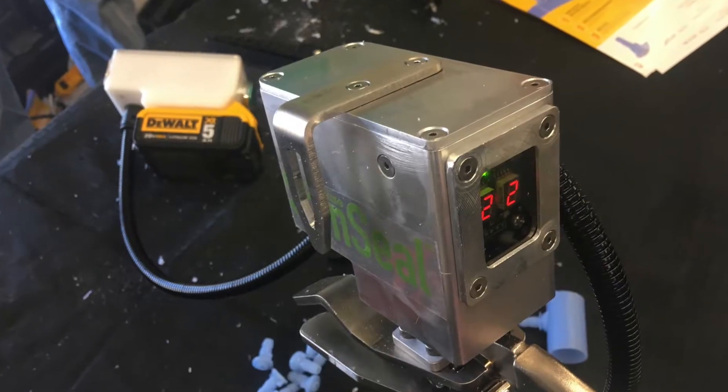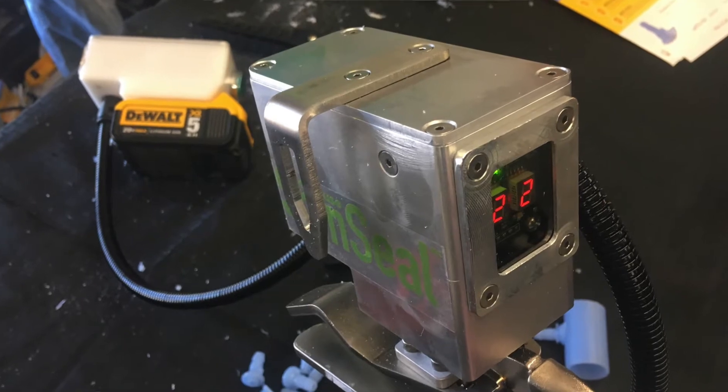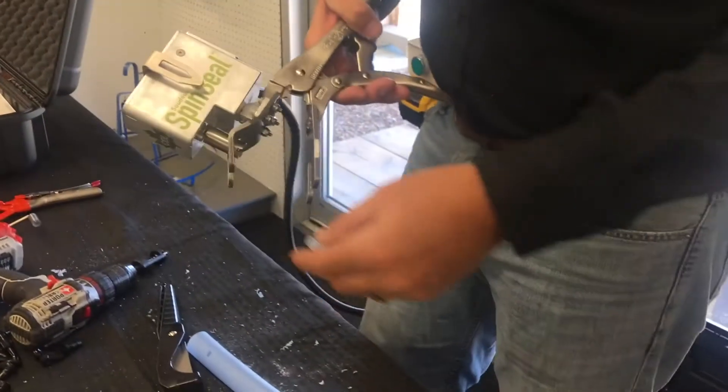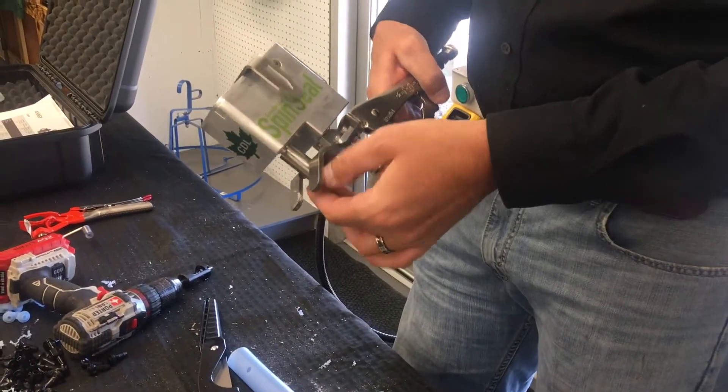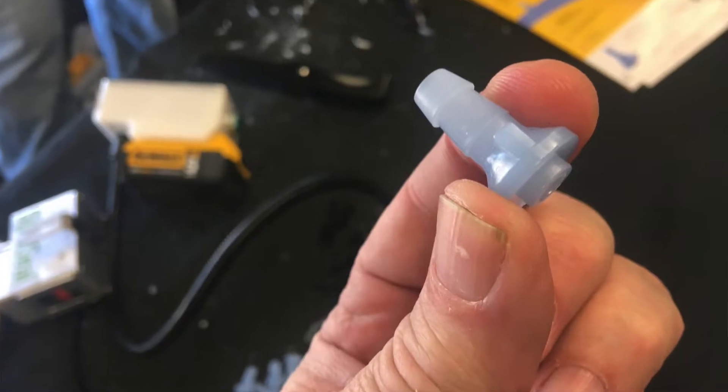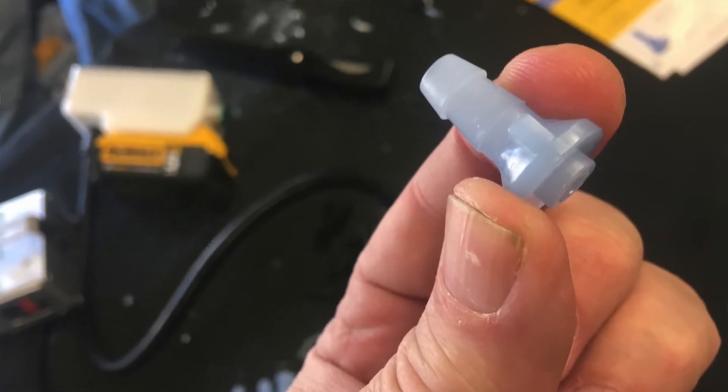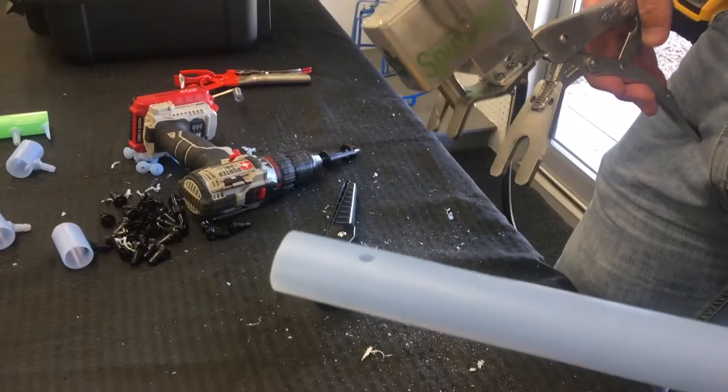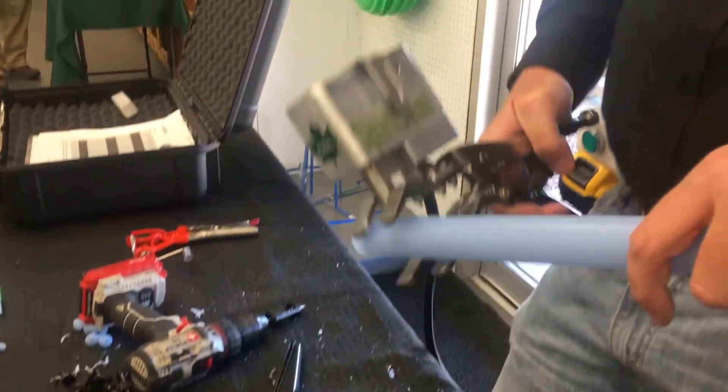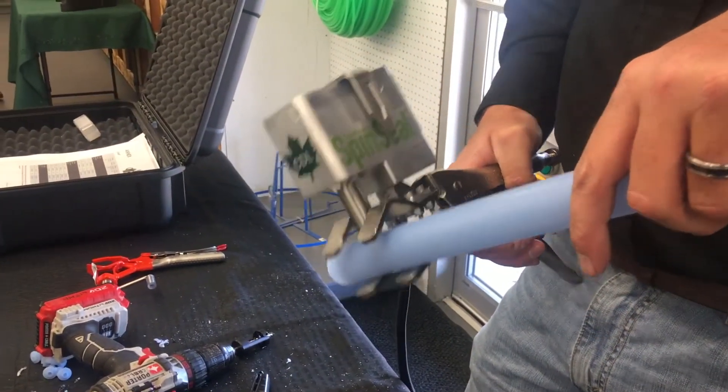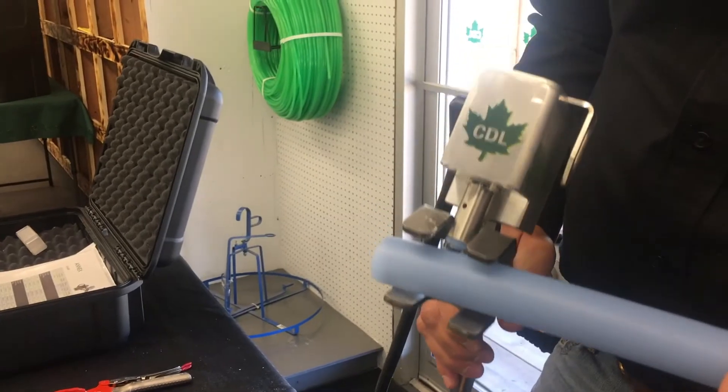We have our spin seal tool and the actual spin seal. Place it in the tool. We have an existing 5/16ths saddle hole and we're just placing the spin seal directly on top of the hole.